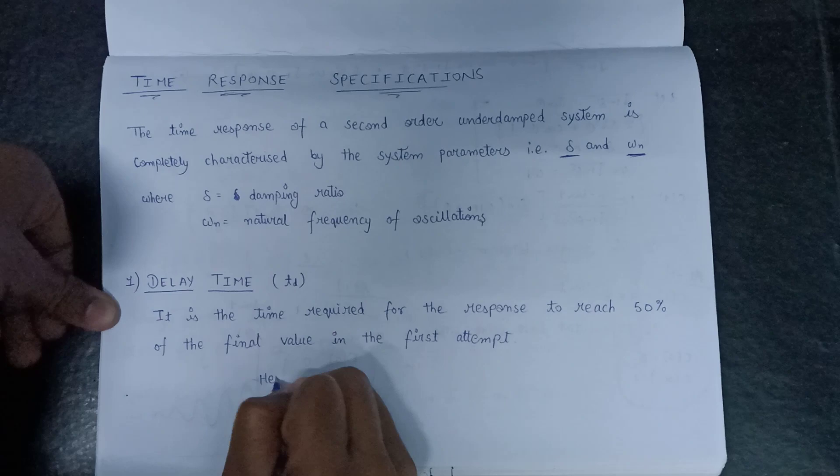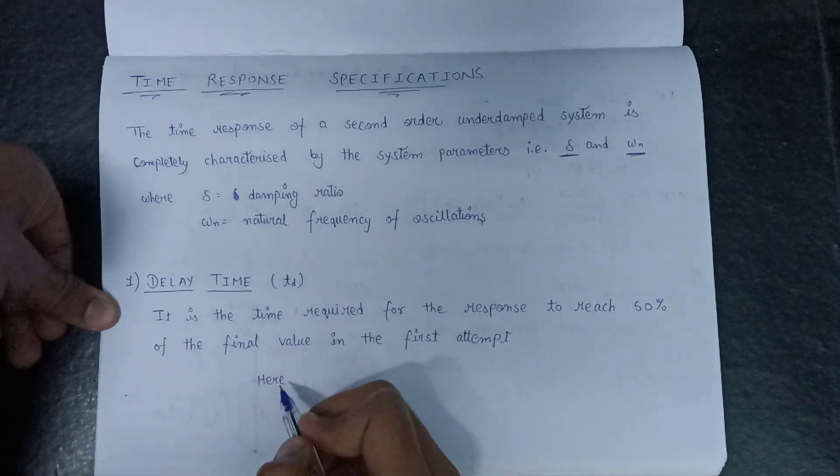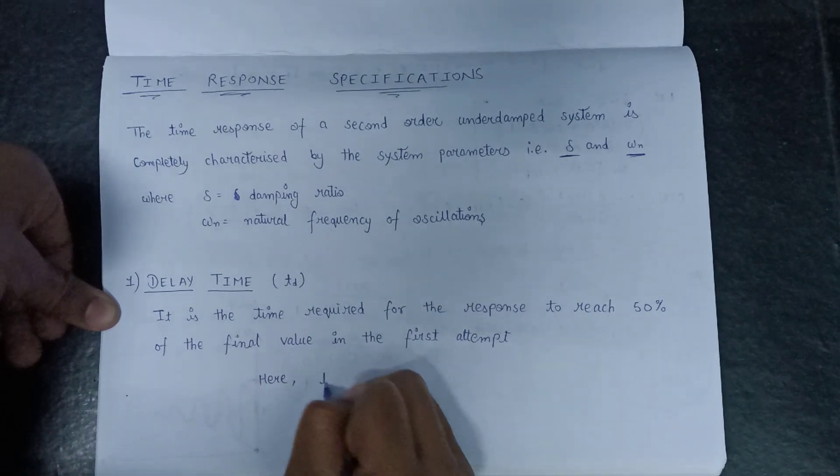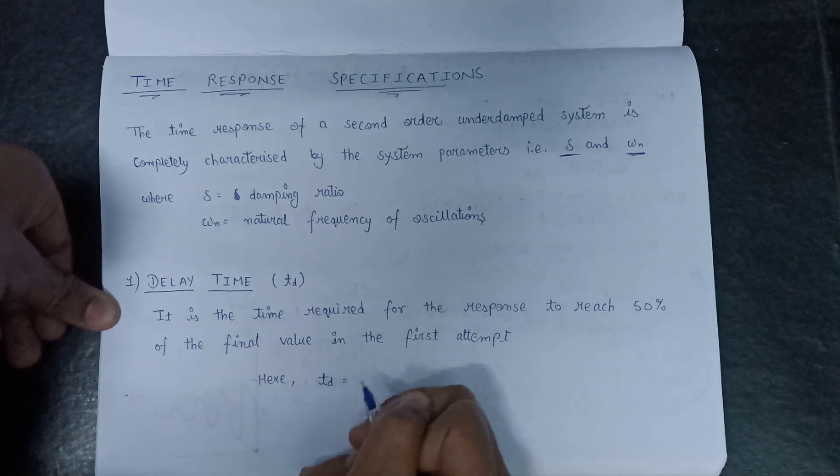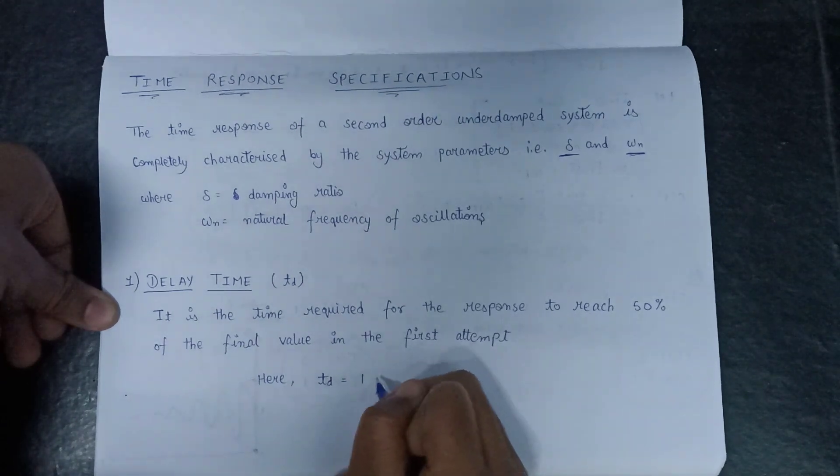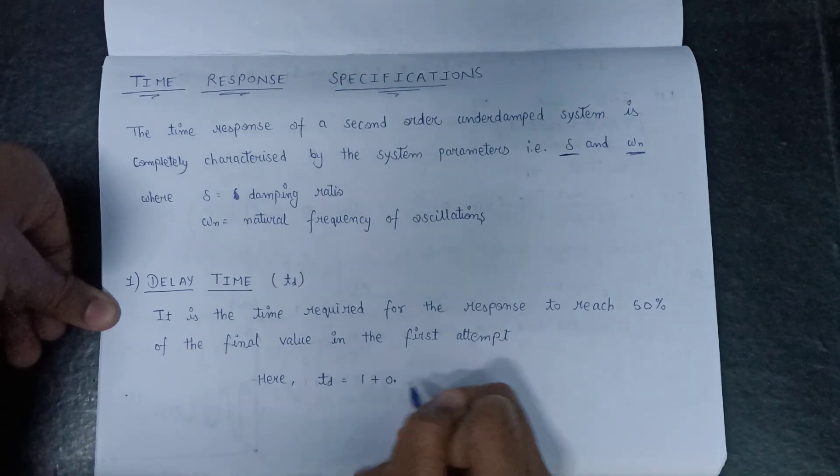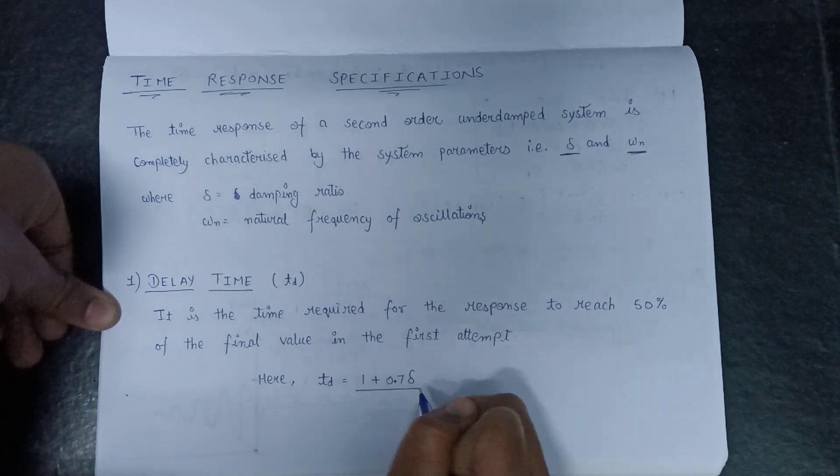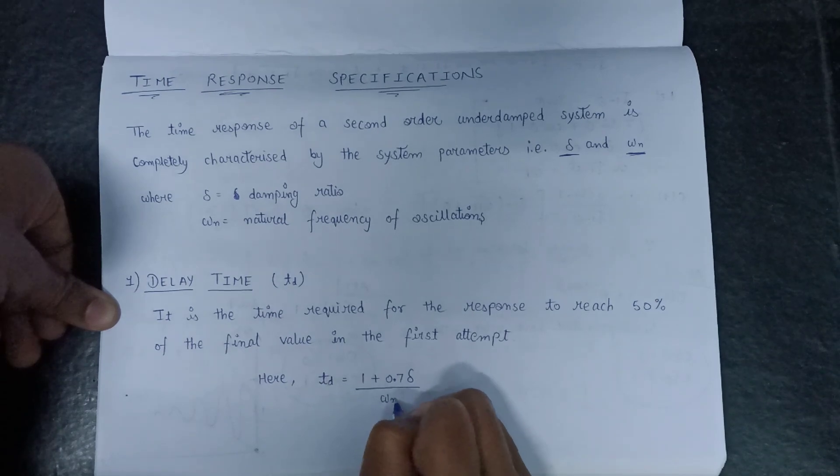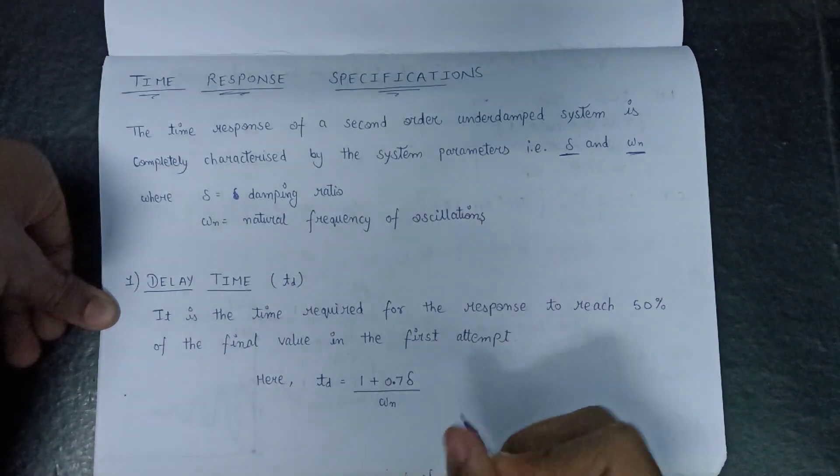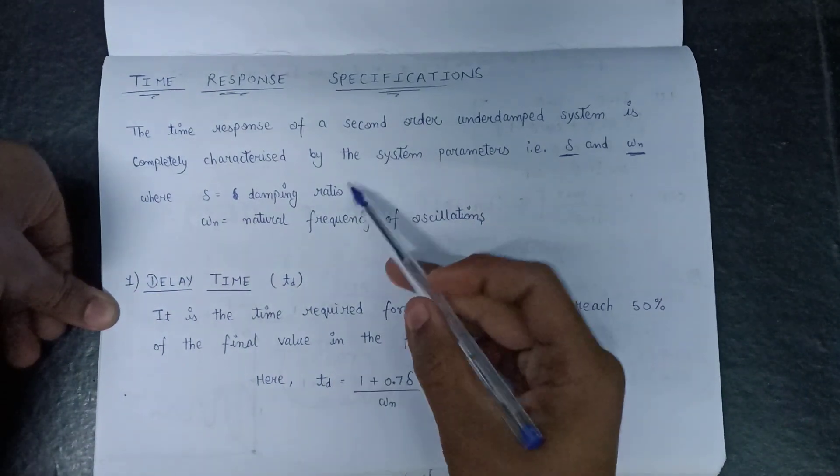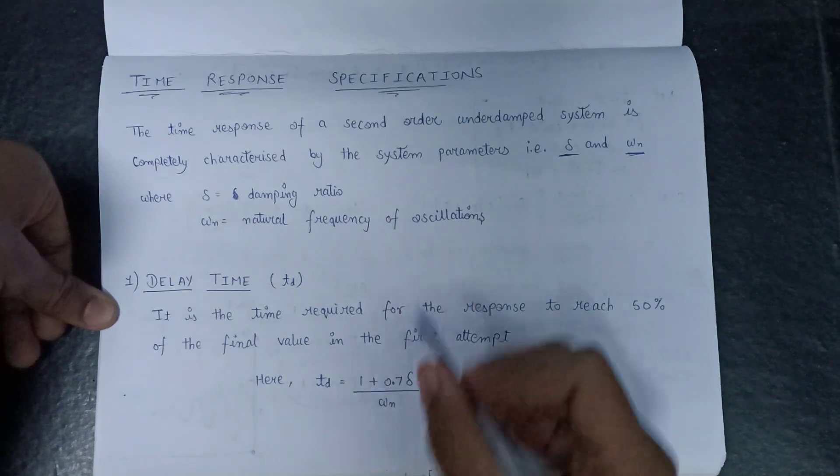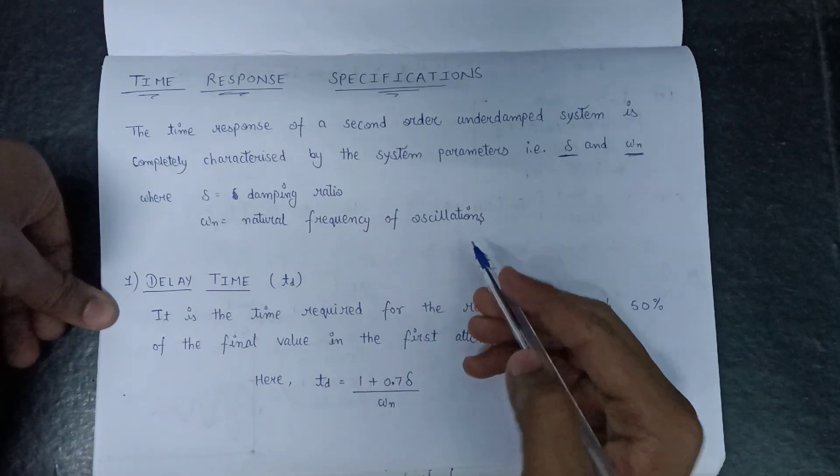T_D can be given as T_D equals 1 plus 0.7 del over omega n, where del is the damping ratio and omega n is the natural frequency of oscillation.